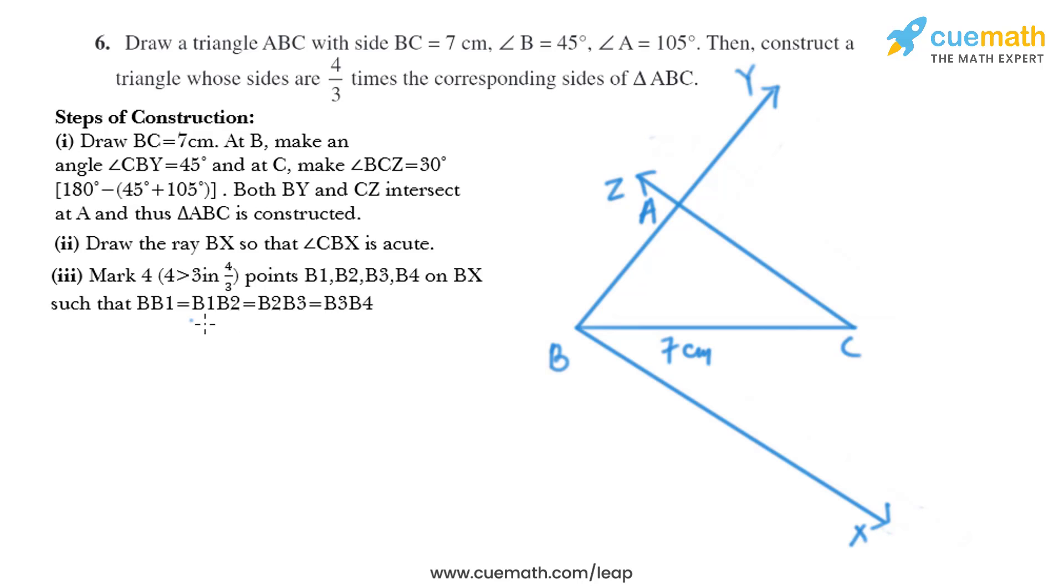Now in the next step we need to mark four points on BX: B1, B2, B3, and B4, such that BB1 equals B1B2 equals B2B3 equals B3B4.